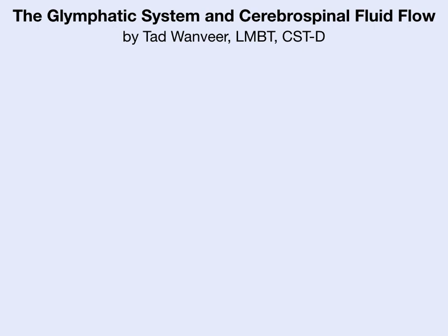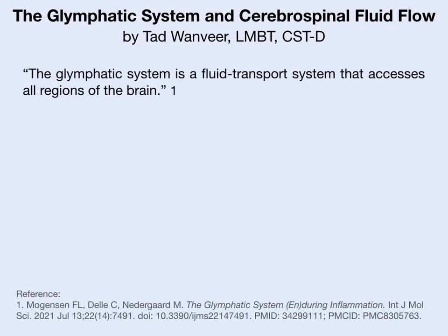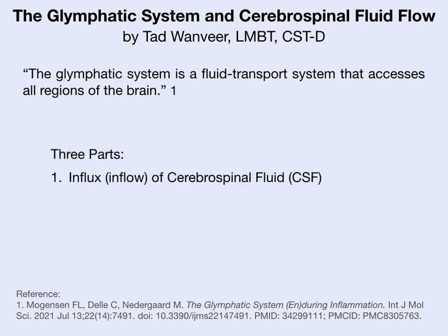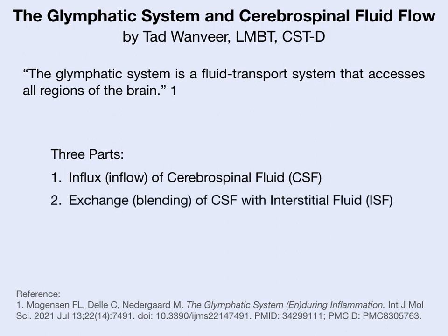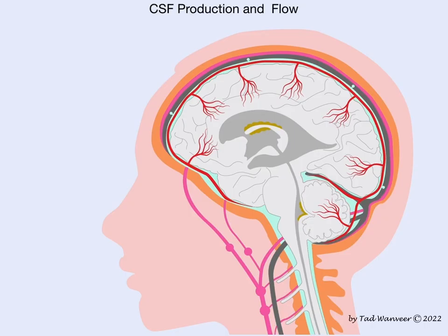This is a brief overview of the glymphatic system and cerebral spinal fluid flow. The glymphatic system is a fluid transport system that accesses all regions of the brain. It has three parts: part one is the influx of cerebral spinal fluid portion; part two is the exchange of cerebral spinal fluid with interstitial fluid portion; and part three is the efflux of interstitial fluid.